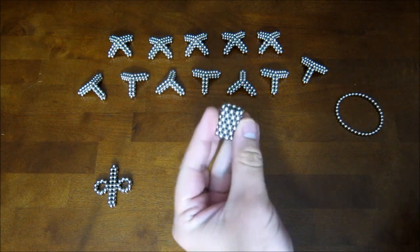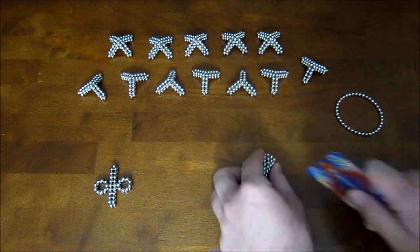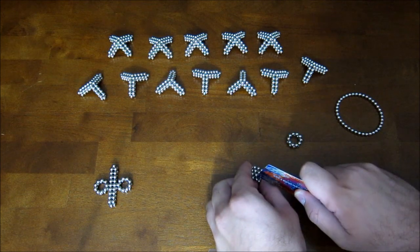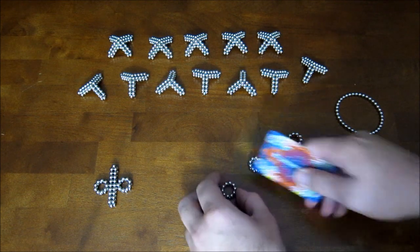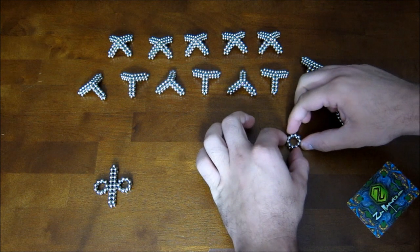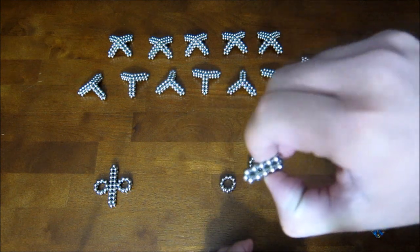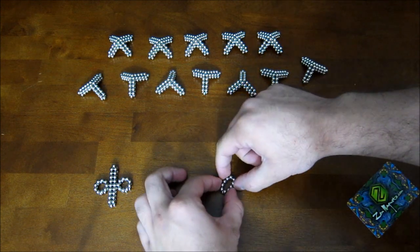You start off with six stacked rings of ten magnets, and you cut them up into three stacks of two, and you can flatten them out into just long straight pieces, which are each five magnets long.